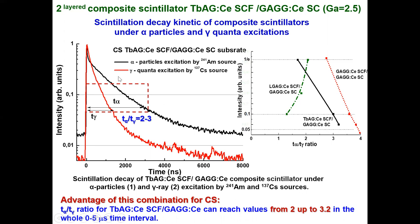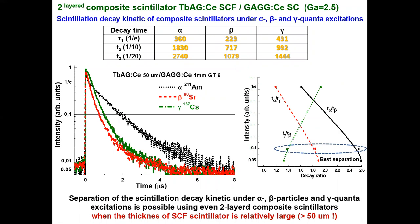The main advantage of this combination is the very high light yield and good separation of decay profiles in the case of alpha particle and gamma quanta registration. We also applied this two-layered composite scintillator for registration of three types of ionizing radiation including beta particles. Very nice separation between alpha, beta, and gamma signals is observed. The T_gamma/T_beta ratio is between 1.3 and 1.8. At the 0.1 level, the best separation of all decay profiles is observed, and in principle, even a two-layered composite can be applied for separation of all three types of ionizing radiation.